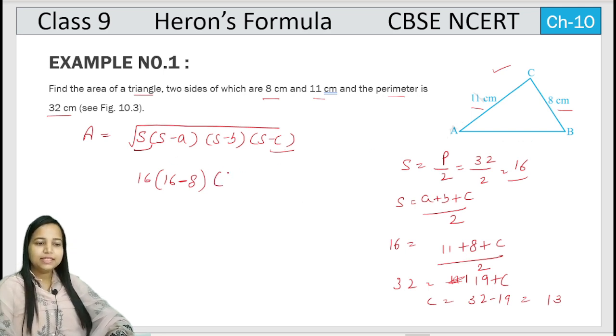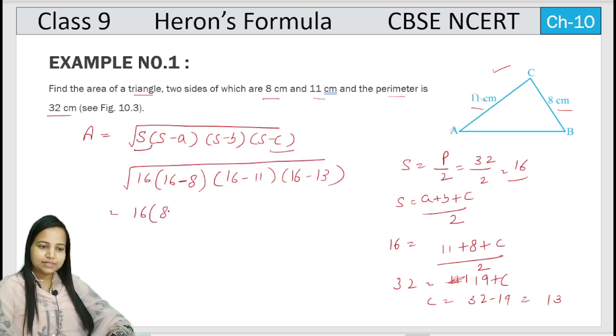So 16 minus 8, then 16 minus 11, 16 minus 13, all under square root. Now 16, 16 minus 8 is 8, 16 minus 11 is 5, and it is 3.